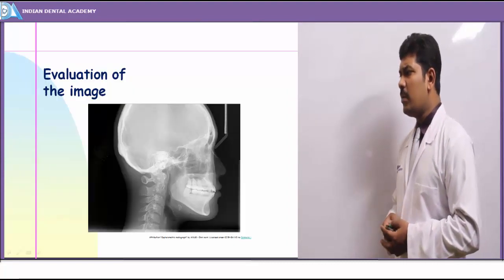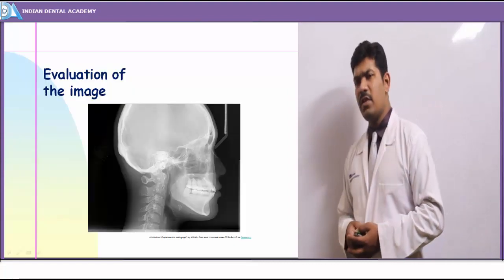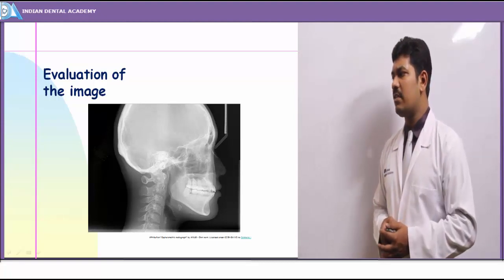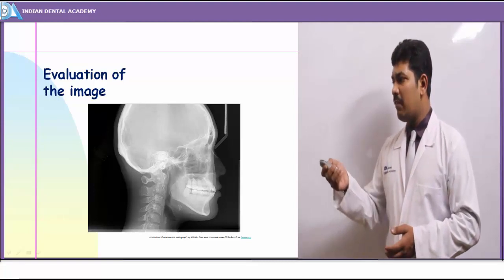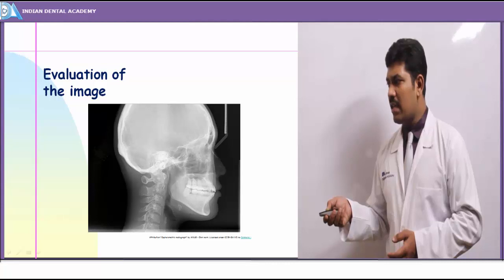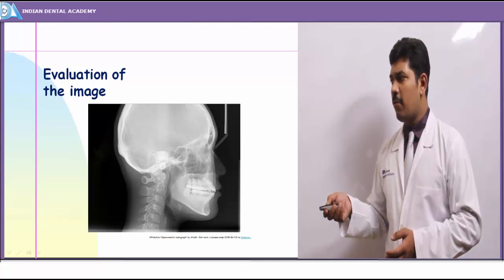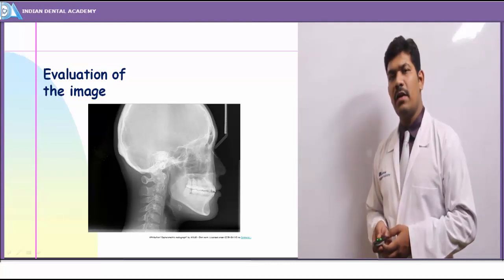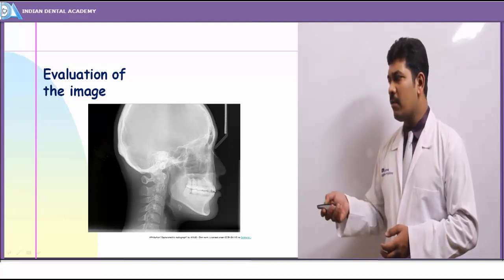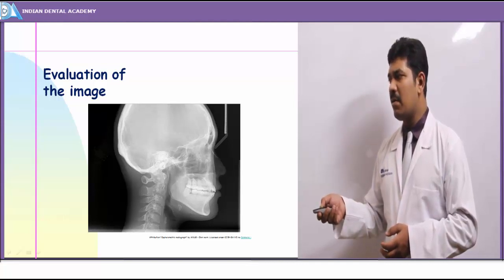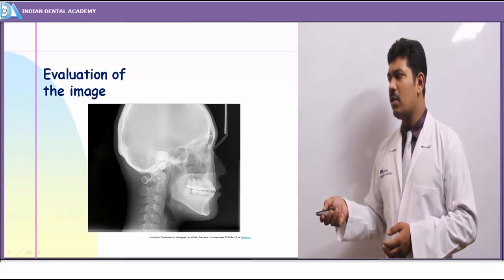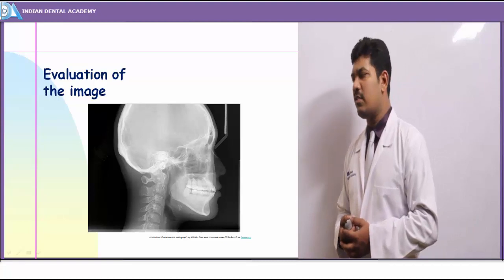On the lateral skull view, we can make out the maxillary sinuses at the front, frontal sinuses just in front of the anterior cranial vault, ethmoidal sinuses just behind the nasal middle third, and the sphenoidal air sinuses at the base of the cranial vault.